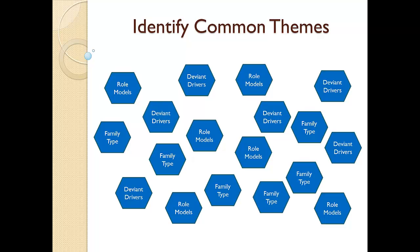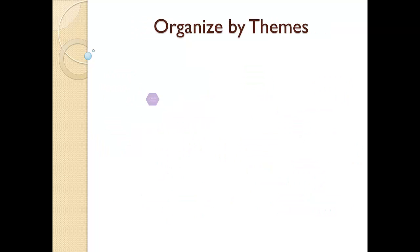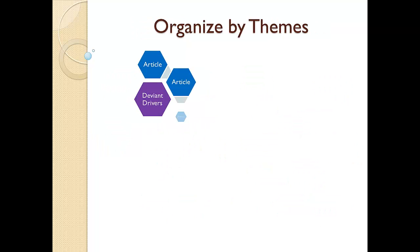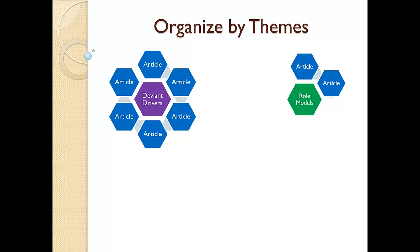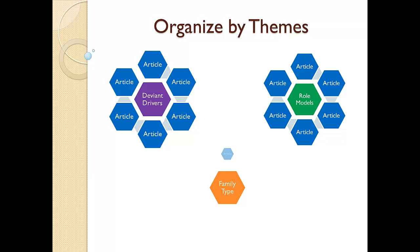I personally think that if you can organize your material into three good theme categories, then you're on the right track to creating a good literature review. Now that I have my themes identified, I can move my articles into their group. Once the articles are within their theme group, I'll need to organize them in a way that makes sense, but that is typically not as challenging as getting them into theme groups.